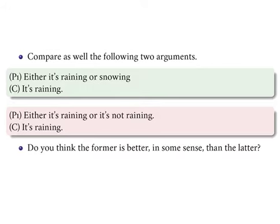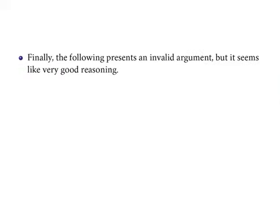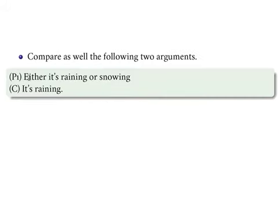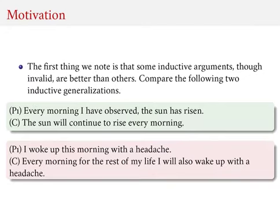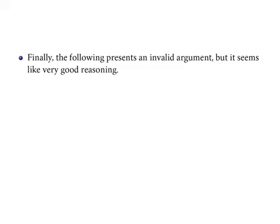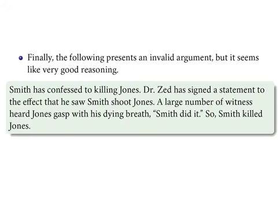Hopefully you can see intuitively that the first argument is a bit better than the second. But that is something which we cannot capture with deductive logic, and so that's why we will be developing inductive logic or probability theory. Here finally is a final example of an invalid argument that seems like very good reasoning. We've already seen a bunch of examples in this video, and in the previous video we also saw a bunch of examples. Now here is a more complex example to really drive this point home about what it means for an argument to be good but not valid.